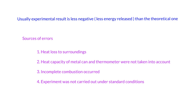The experimental result will normally be less negative, or show less energy released, than the theoretical value. There are a few sources of error. First, heat loss to surroundings — so the energy you calculate will be smaller. Second, the heat capacity of the metal can and the thermometer were not taken into account. They will also absorb energy and have their temperature rise, so the energy we calculate will also be less than expected. Third, some reactions may have incomplete combustion — if the reaction is not purely complete combustion, energy will be lost as well.